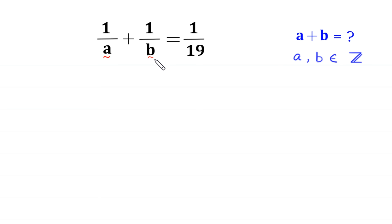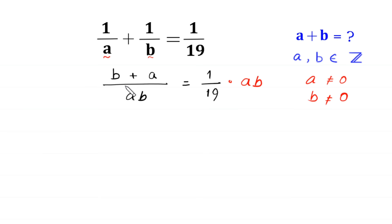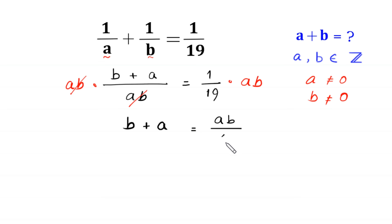Since a and b are in the denominators, a cannot be equal to 0 and b cannot be equal to 0. Now we take the LCM of a and b. The LCM of a and b is ab, and ab divided by a is b, so we get b plus a over ab, which equals 1 over 19. Now we multiply both sides by a times b, leaving us with b plus a equals ab over 19.